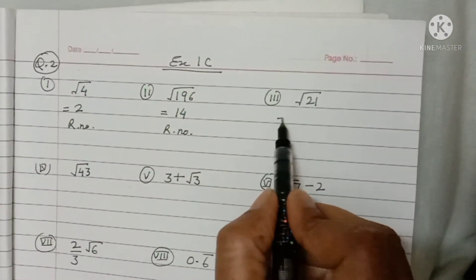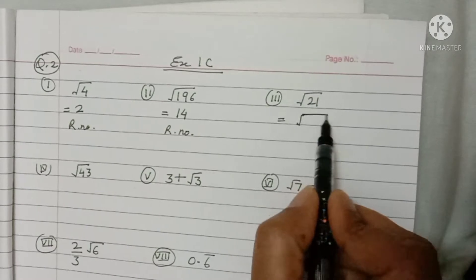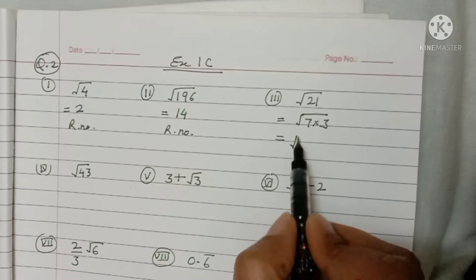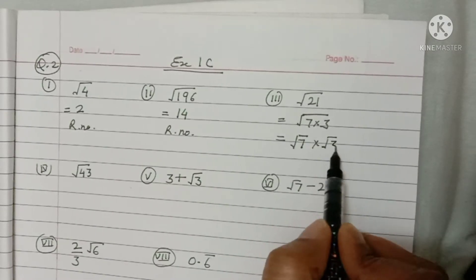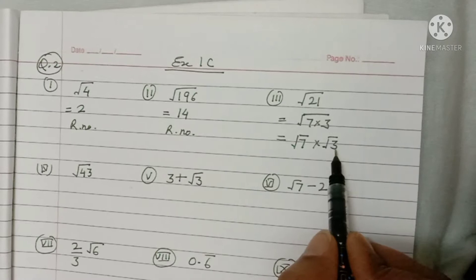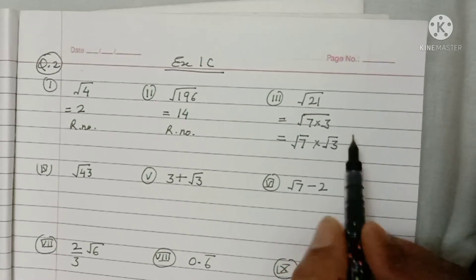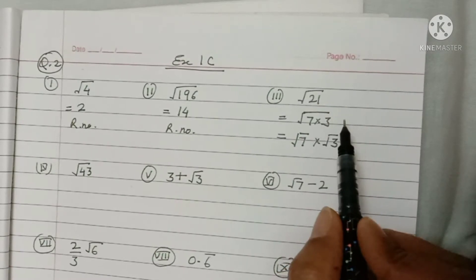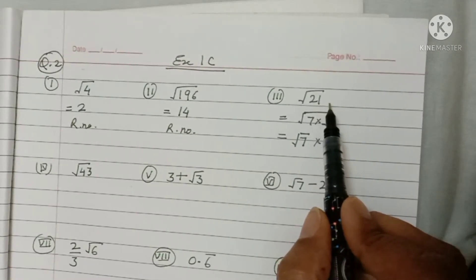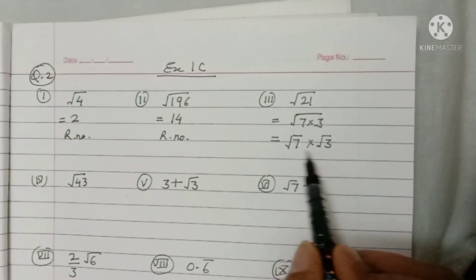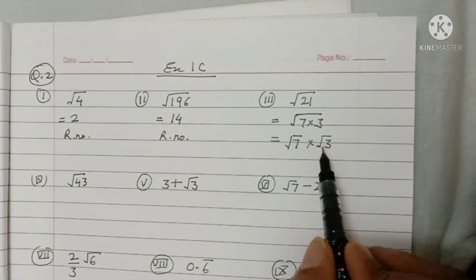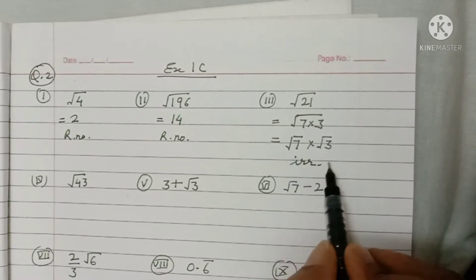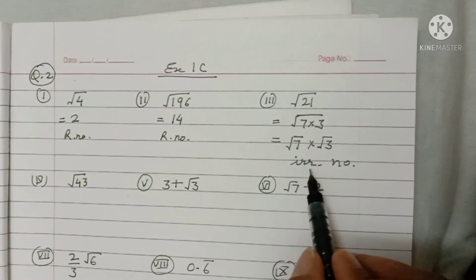Now √21: you can break it as √7 × √3. Both √7 and √3 are irrational numbers, so this is an irrational number. You cannot find the exact square root of 21 because it is a non-perfect square — √7 and √3 are not perfect squares.